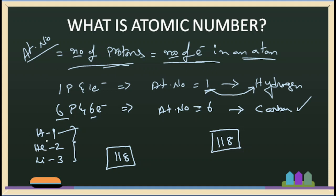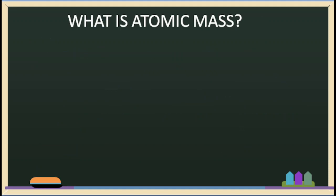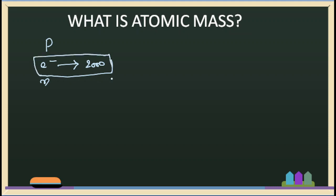Now let us understand a small detail about atomic mass. In the last video, we were discussing subatomic particles — protons, electrons, and neutrons. The mass of electrons is about 2,000 times less than the mass of protons and neutrons, so the mass of electrons can be considered negligible. Therefore, the mass of an atom is essentially the number of protons and neutrons.